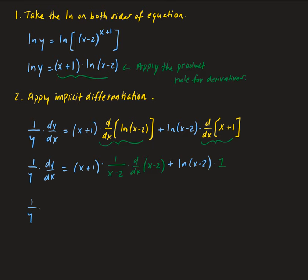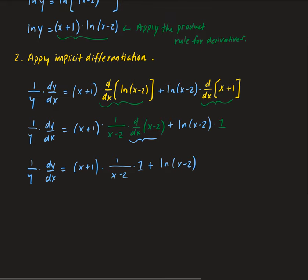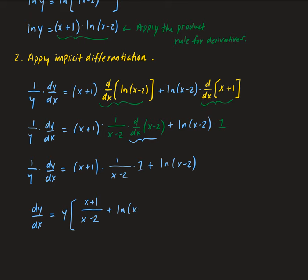From here, we get 1 over y times dy/dx equals x plus 1 times 1 over x minus 2 — since the derivative of x minus 2 is just 1 — plus natural log of x minus 2 times 1. We can now go ahead and isolate dy/dx by multiplying both sides by y, giving us dy/dx equals y times the quantity x plus 1 over x minus 2 plus natural log of x minus 2.